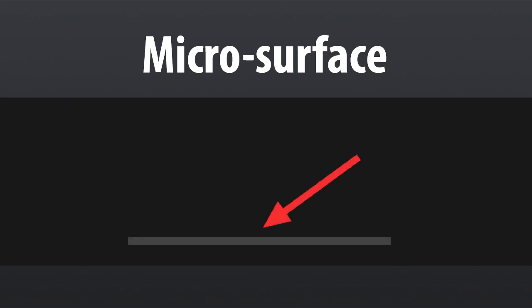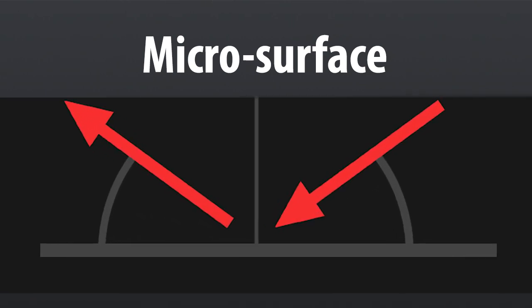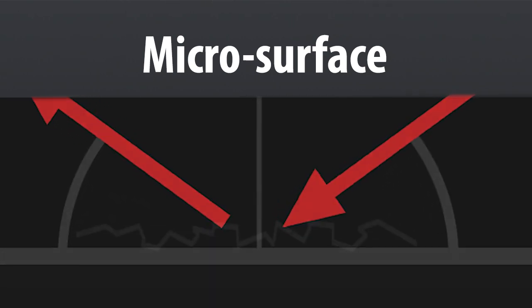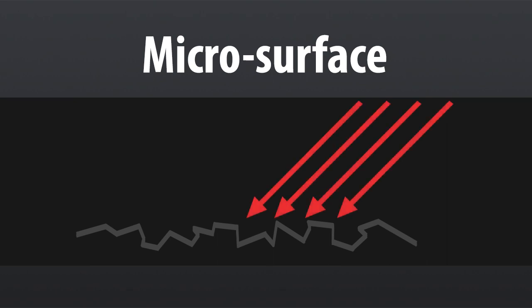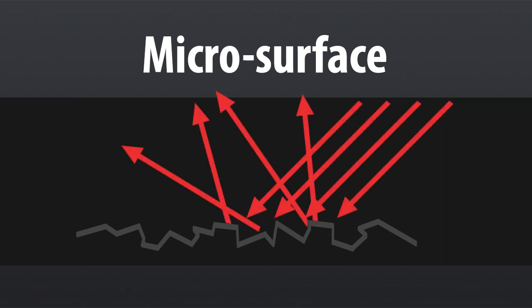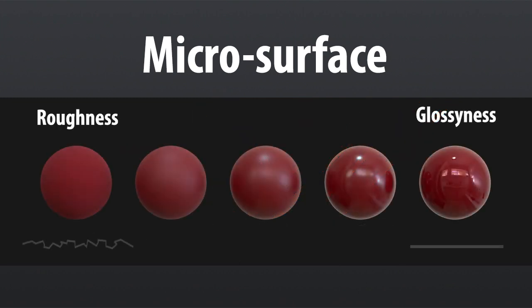The second concept is the microsurface. Normally, when a light ray hits the surface of an object, it bounces off at an angle identical to the incident ray. But if we look closely at the surface — practically with a microscope — we can see that this surface can have many imperfections. In that case, the rays of light will bounce off in many different directions, and this determines the specularity of the surface.